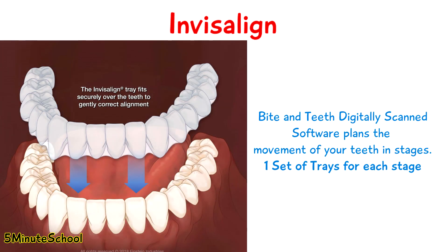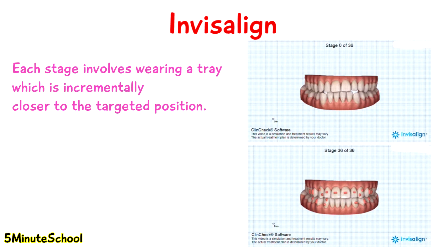Invisalign and clear aligners work a little bit differently. Your bite and teeth are digitally scanned and a computer program works out how to straighten your teeth in stages. Each stage involves a very slight change in position and you get a new set of clear trays to wear. If you wear them properly and for the right amount of time your teeth will shift due to the tightness of each tray, incrementally moving them into the correct ideal position designed by the software. If your teeth only need slight straightening, only a few sets of trays are needed.